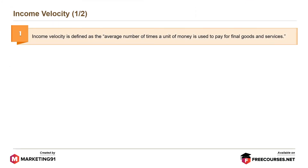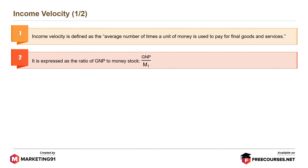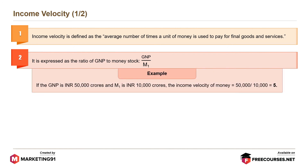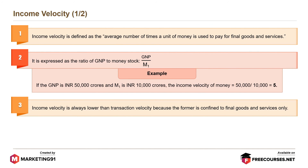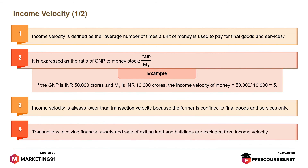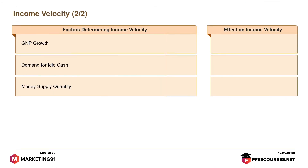Income Velocity is defined as the average number of times a unit of money is used to pay for final goods and services. It is expressed as the ratio of GNP to money stock. For example, if GNP is Rs. 50,000 crores and M1 is Rs. 10,000 crores, then income velocity equals 50,000 divided by 10,000, which equals 5. Income Velocity is always lower than transaction velocity because the former is confined to final goods and services only; transactions involving financial assets and the sale of existing land and buildings are excluded. Factors: increase in GNP growth results in increase in income velocity; increase in demand for idle cash leads to decrease in income velocity; and increase in money supply quantity results in decrease in income velocity.